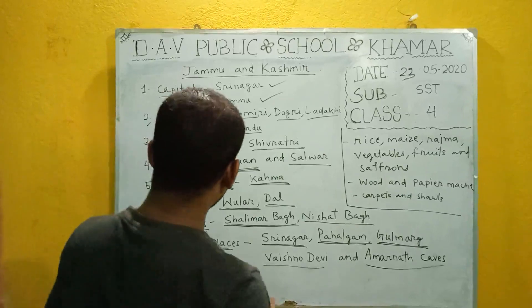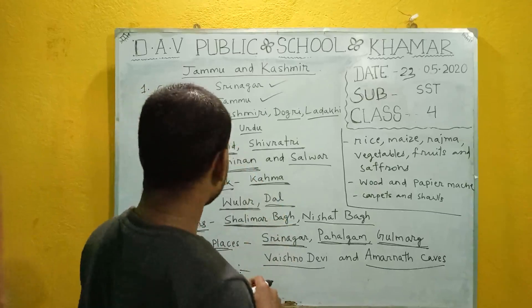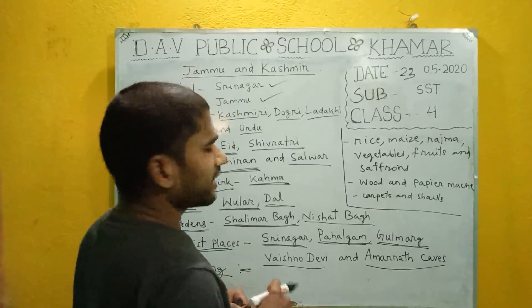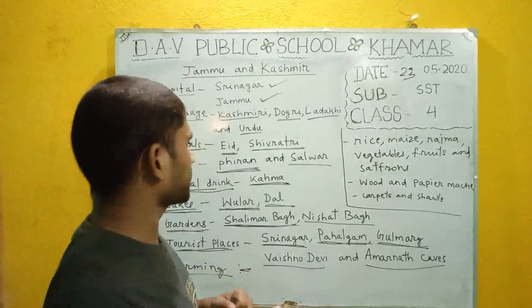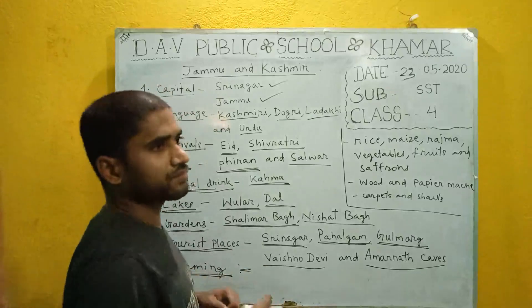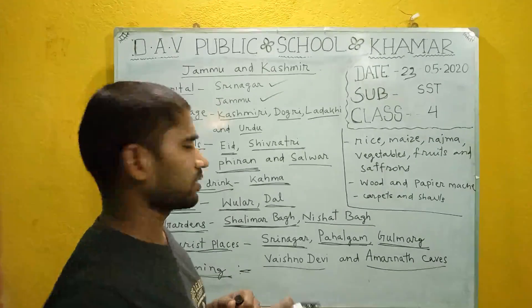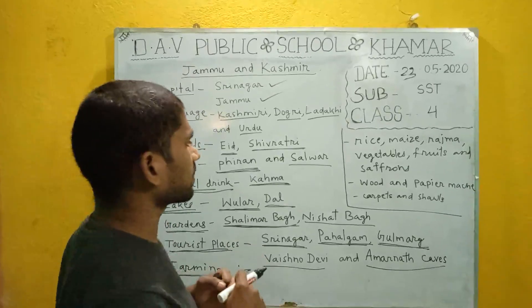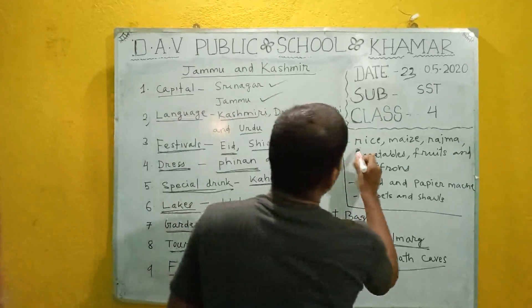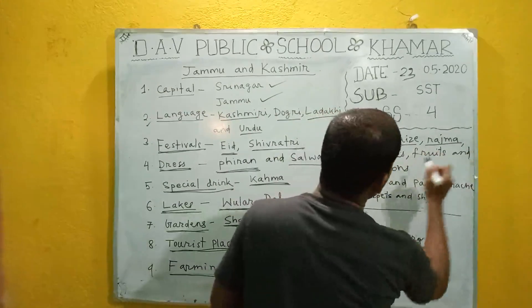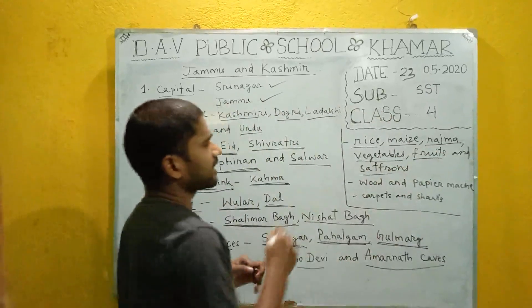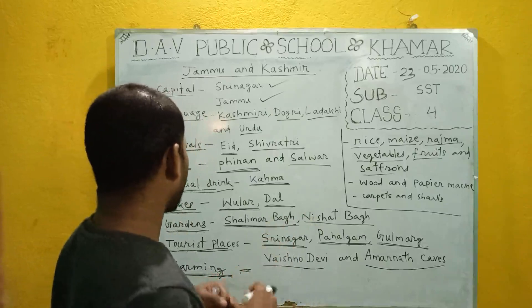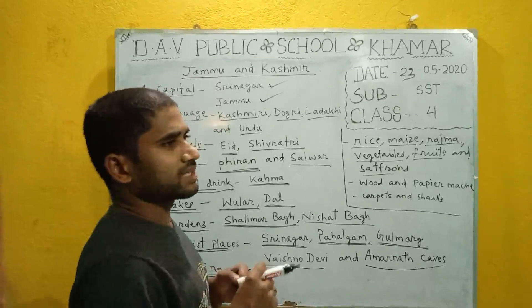When we talk about the farming of the people of Jammu and Kashmir, they mainly depend on farming, agriculture, and handicraft. During summer, as it is not very cold, the people work in the fields and grow different types of food grains like rice, maize, rajma, vegetables, fruits, and saffron.